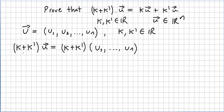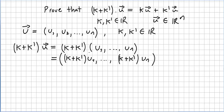So what is (k + k') times u? Well, that will be (k + k') — these two scalars — times the vector u with components u1, u2, ..., un. The scalar multiplies each component: (k + k')·u1, (k + k')·u2, ..., (k + k')·un.